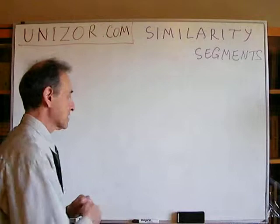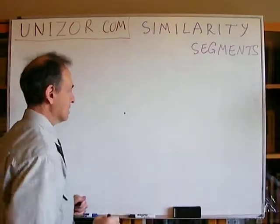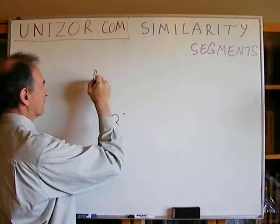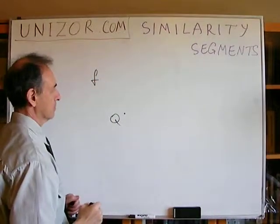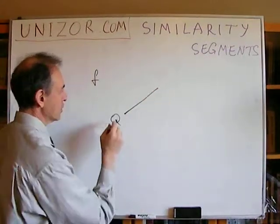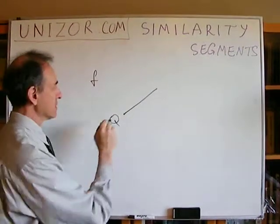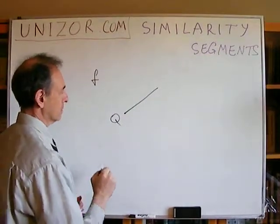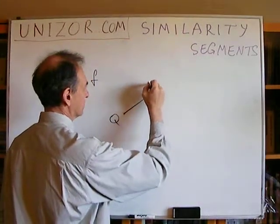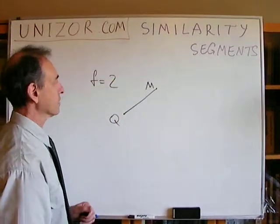Well, let's start with something simple. If you have center of scaling and some factor F, and we will consider any segment which has an endpoint in the center, exactly the center of scaling, an endpoint somewhere else. Well, just for example, factor is equal to 2.